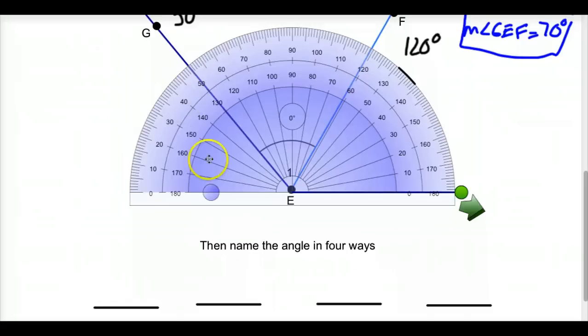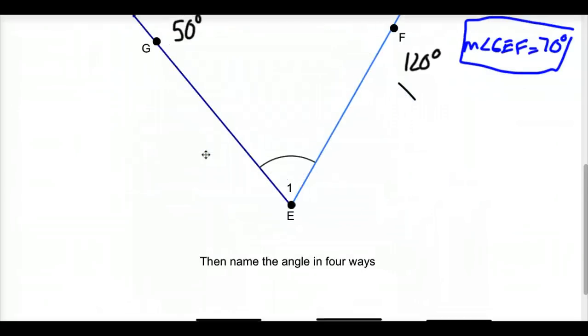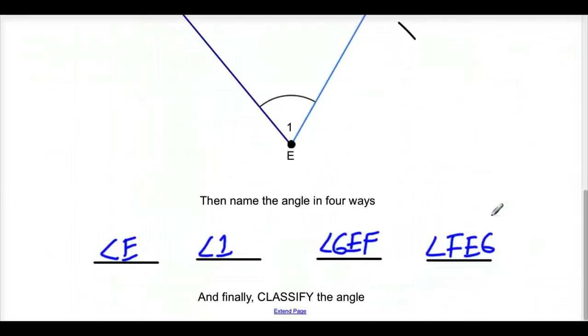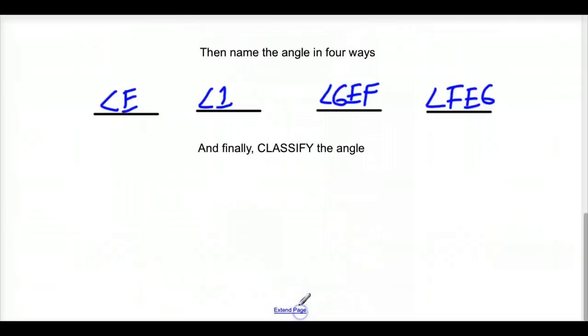Now, the bonus question here is we got to name this in four different ways. Let's start with the easy ones. This could be called angle E, right? Because that's our vertex. This could be angle one, because we have the number one right here. This could be angle GEF. Start here, GEF. Or angle, going the other way, FEG. And that is how it's done. Boom. All right, guys, that's it for this lesson. Oh, what? There's more? We have to classify it? Not going to leave you hanging. Well, since we know that it's 70 degrees, this would be considered less than 90. So this is an acute angle.